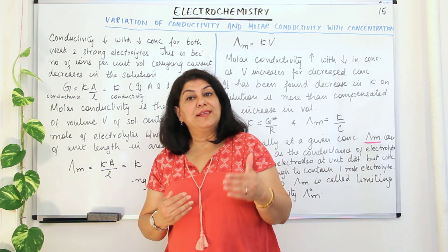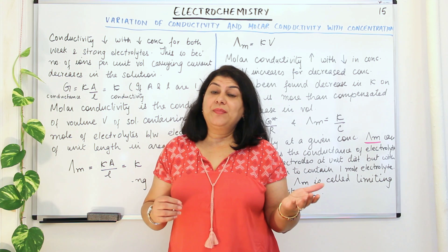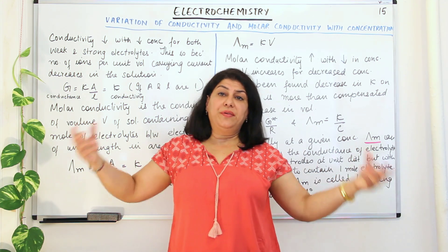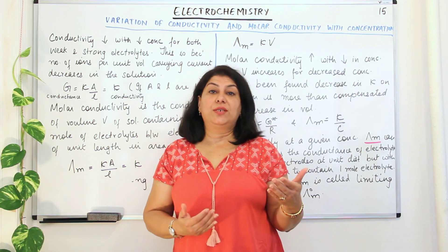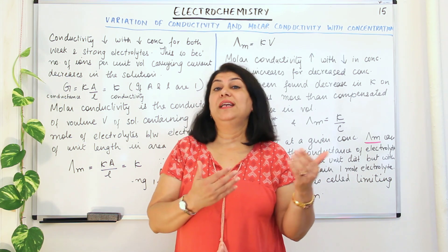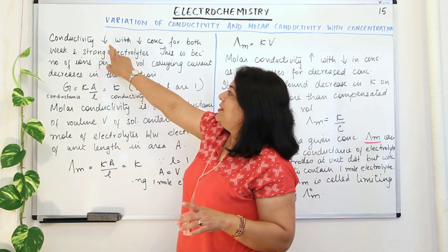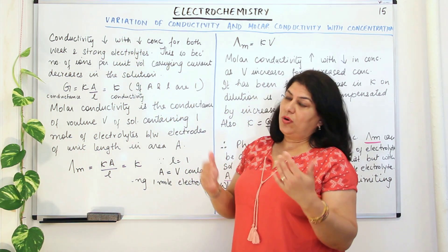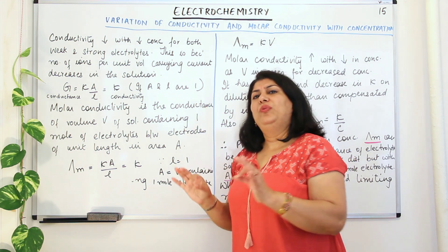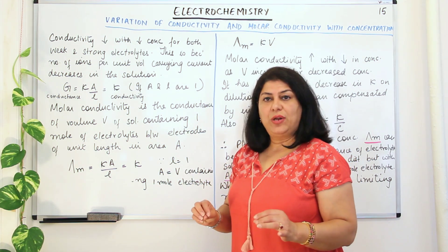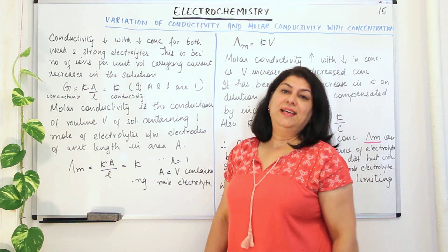As you go on increasing the concentration of the ionic compound, conductivity goes on increasing. It is simple to understand: as the ions increase, the number of charge carriers increases, and therefore with an increase in concentration, conductivity increases. This holds for both weak and strong electrolytes — if the number of ions in solution is increasing, conductivity is definitely increasing.